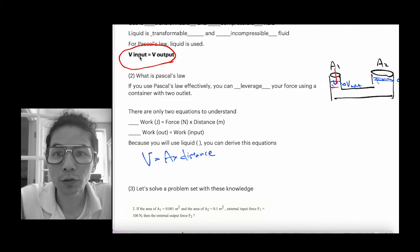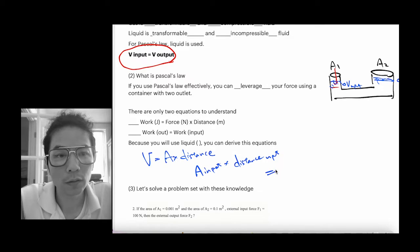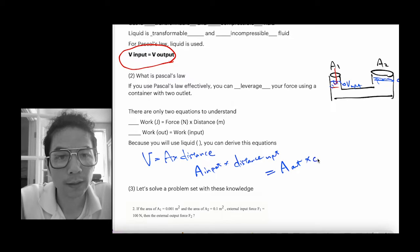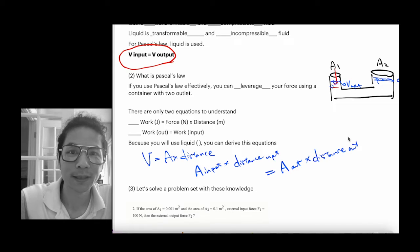Using the volume equation, you can write: volume input equals A1 multiplied by distance input, and volume output equals A2 multiplied by distance output. This is the general equation that you have to know, and with this knowledge you should already be able to solve the problem.